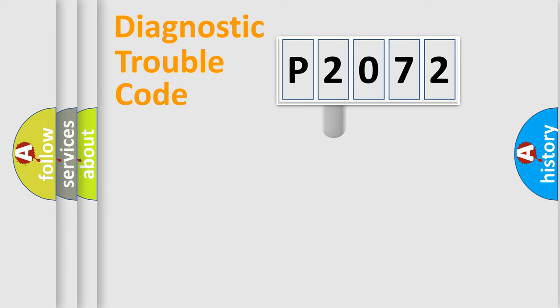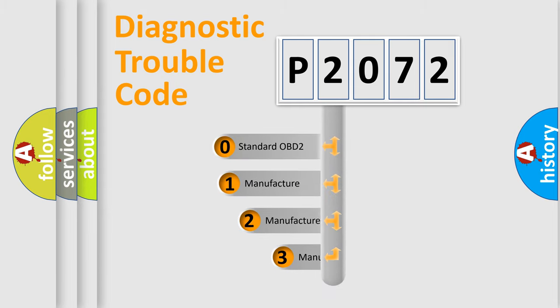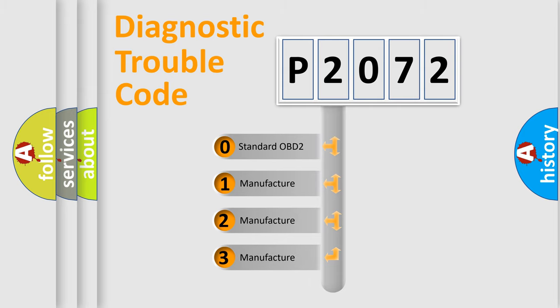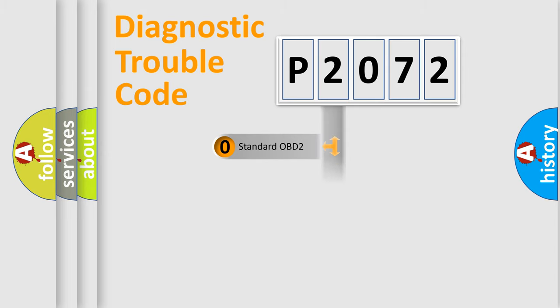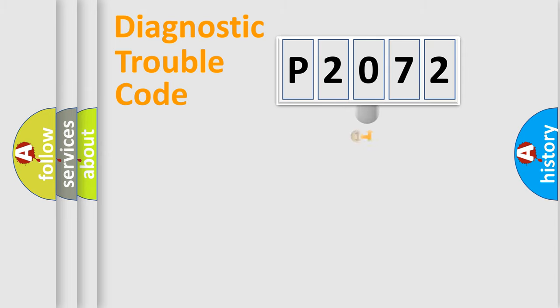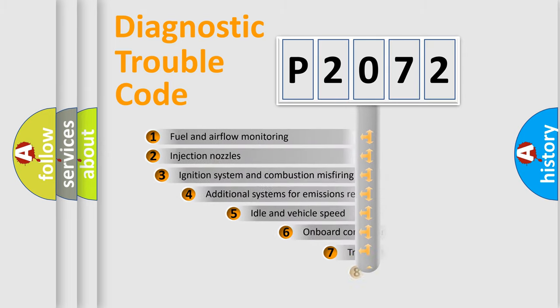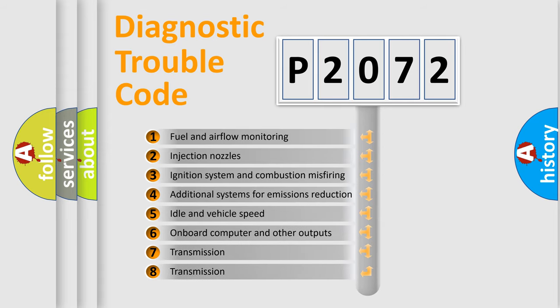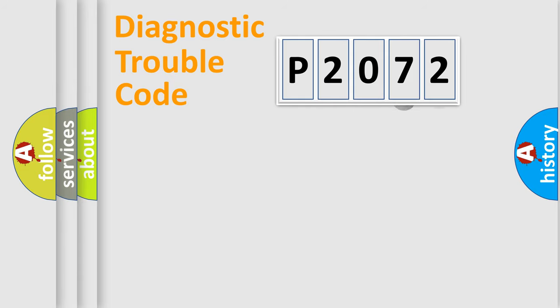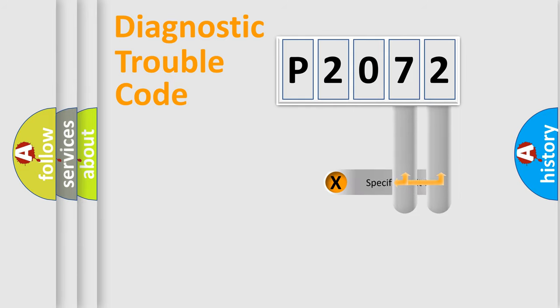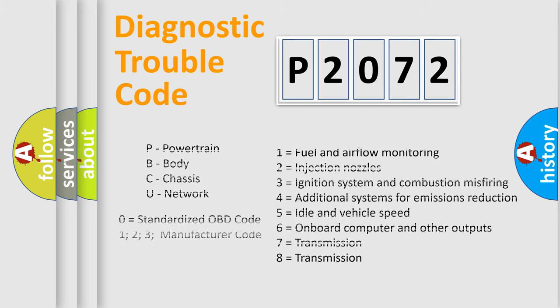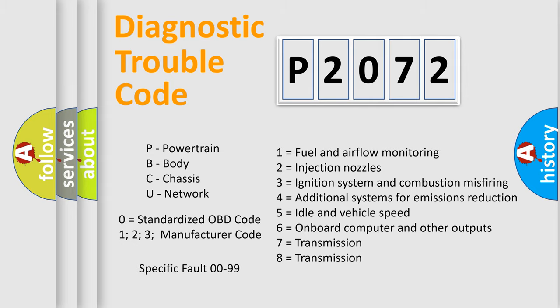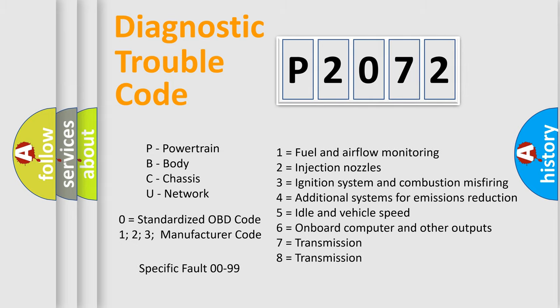This distribution is defined in the first character of the code. If the second character is expressed as zero, it is a standardized error. In the case of numbers 1, 2, or 3, it is a manufacturer-specific expression of a car-specific error. The third character specifies a subset of errors. This distribution is valid only for the standardized DTC code, and only the last two characters define the specific fault of the group.